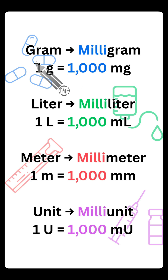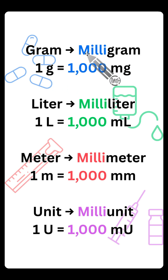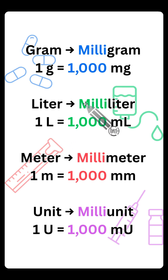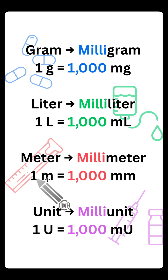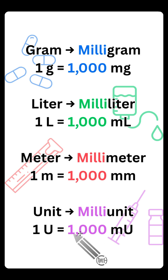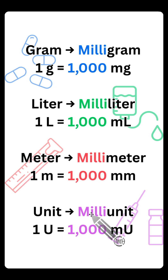So one gram equals 1,000 milligrams. One liter equals 1,000 milliliters. One meter equals 1,000 millimeters. And one unit equals 1,000 milli units.